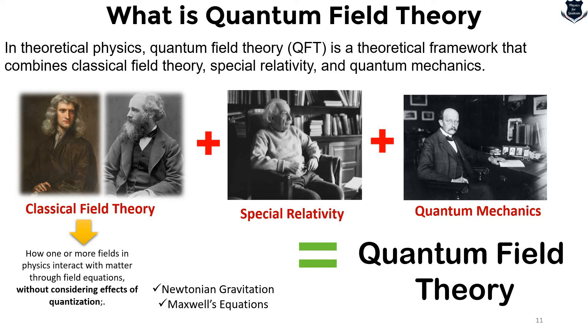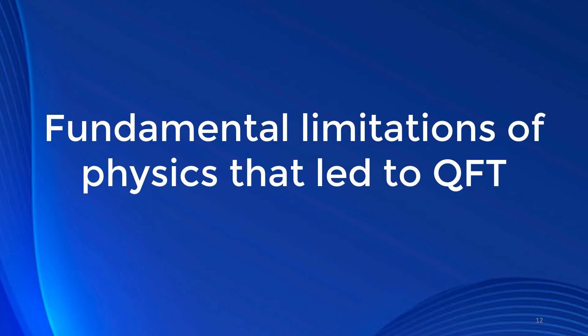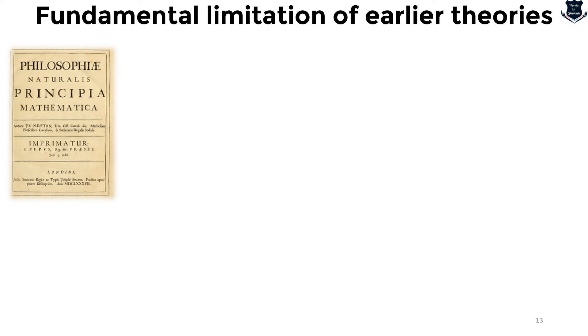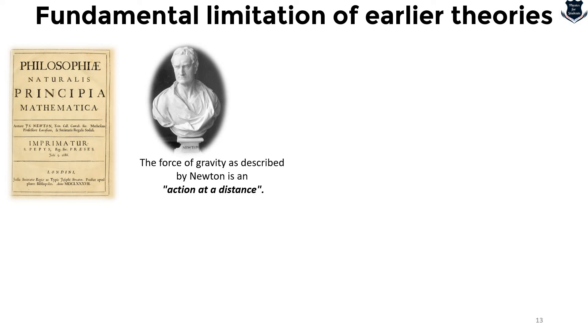Now comes the question: there must have been a limitation of earlier theories — certain things that cannot be defined — and that is why we need a quantum field theory. The earliest successful classical field theory emerged with Newton's law of gravitation in the Philosophiae Naturalis Principia Mathematica. The force of gravity, which Newton described as action at a distance, had instantaneous effects on far-away objects.